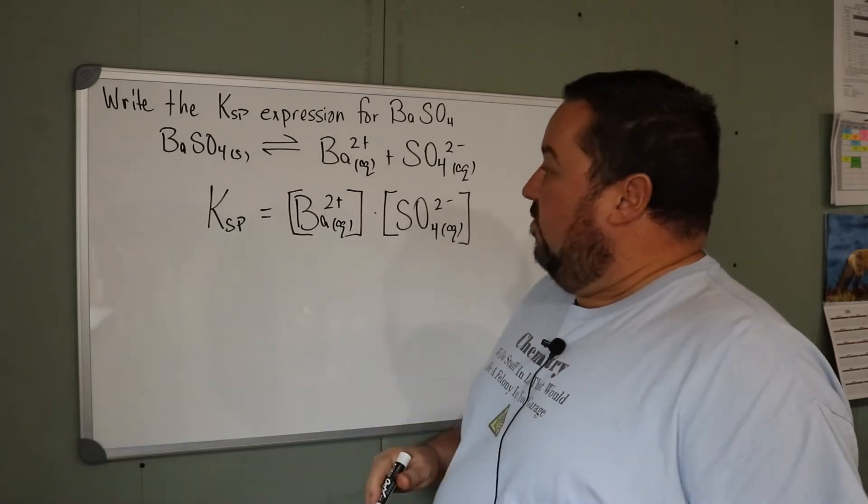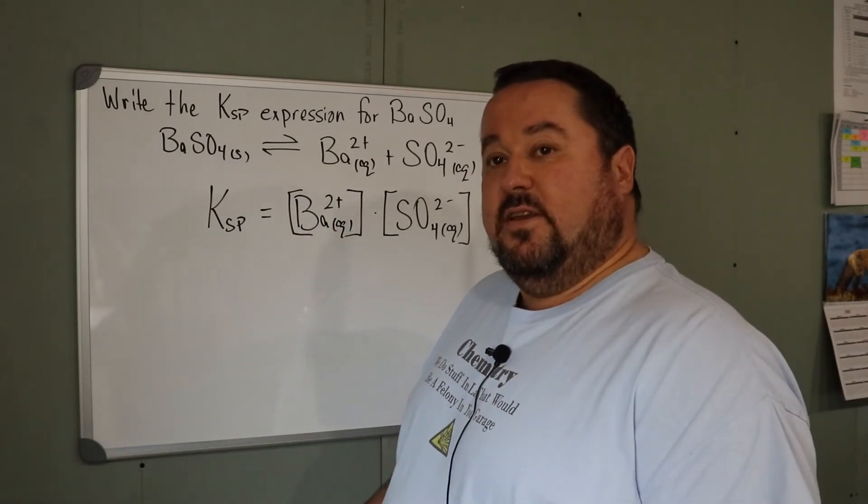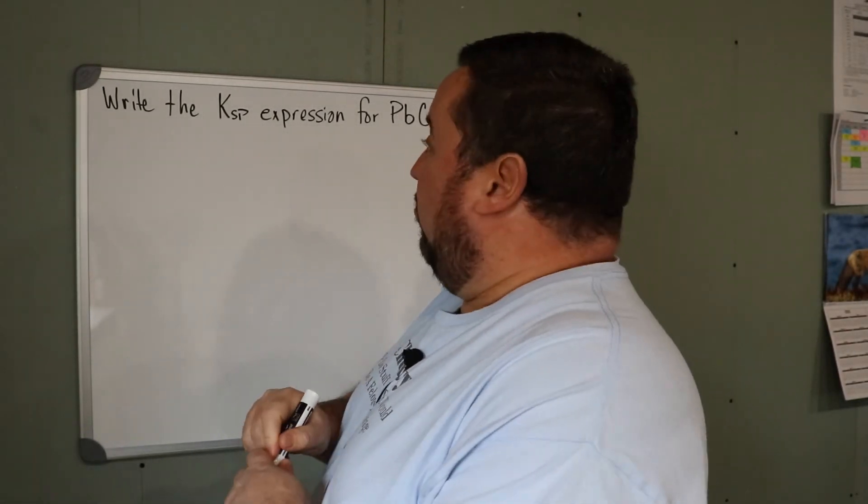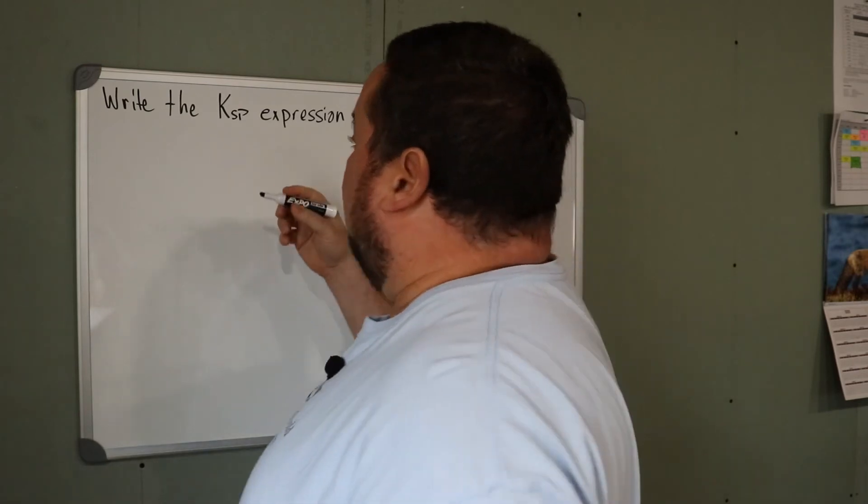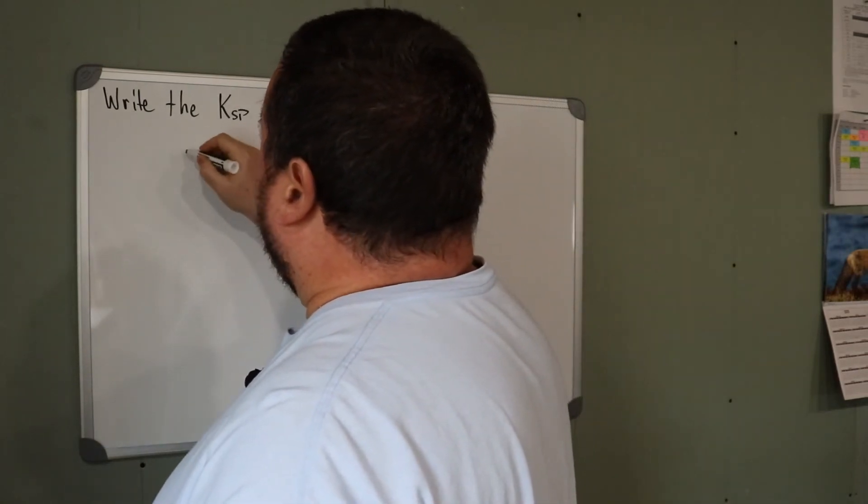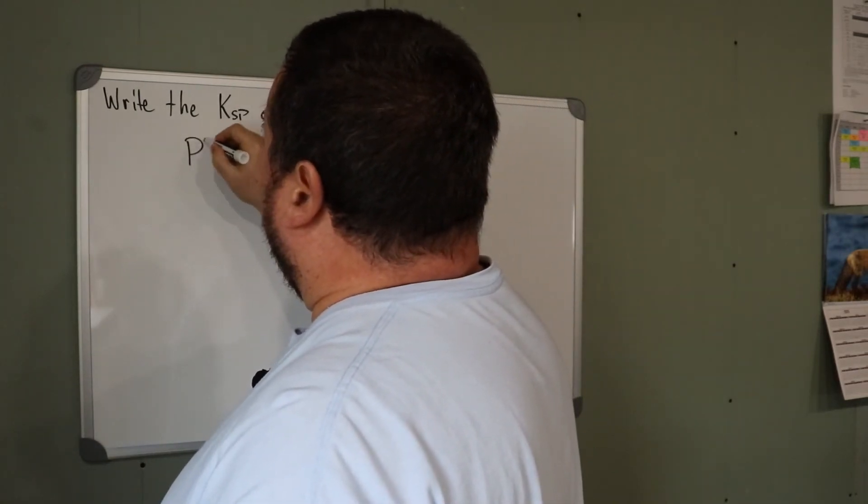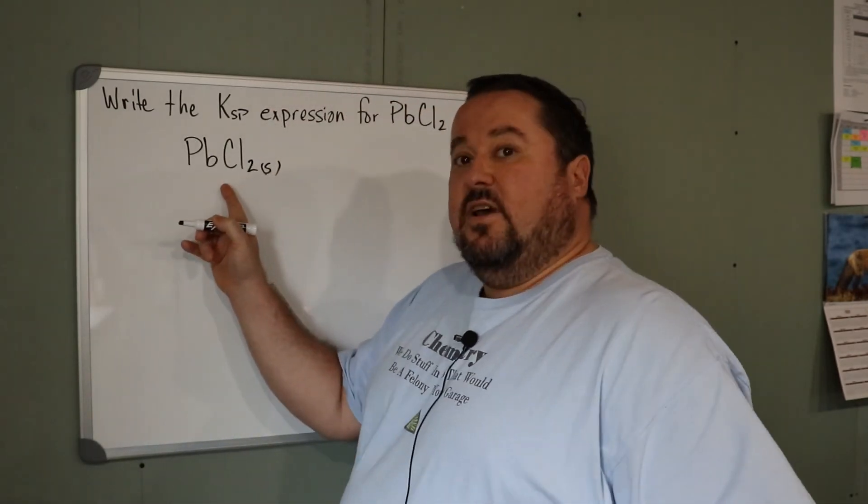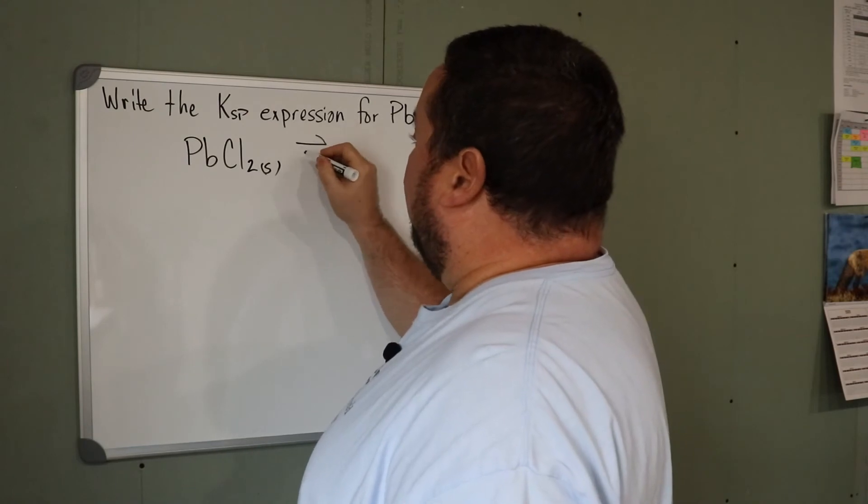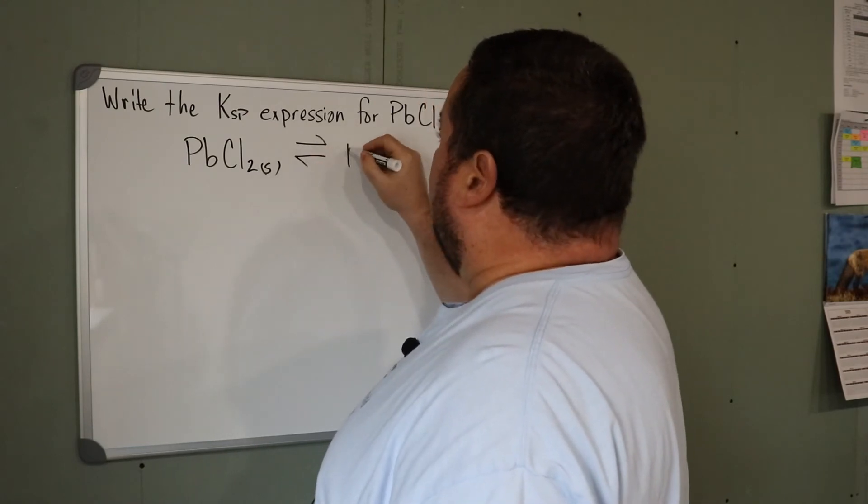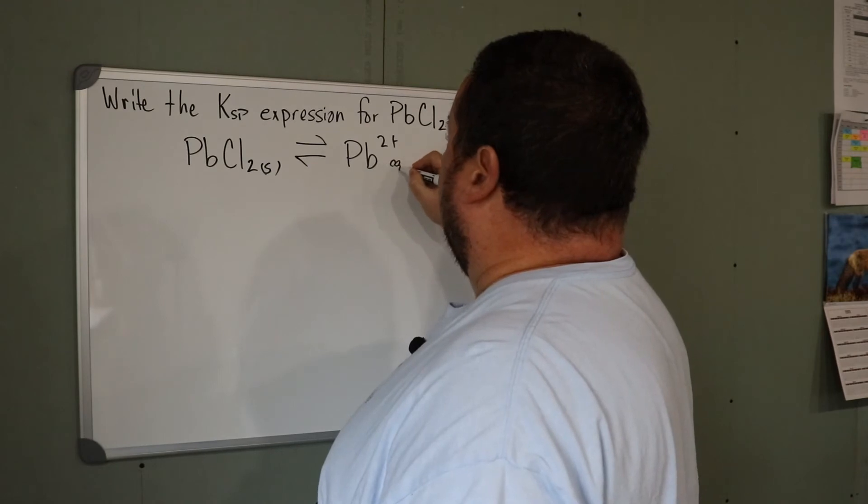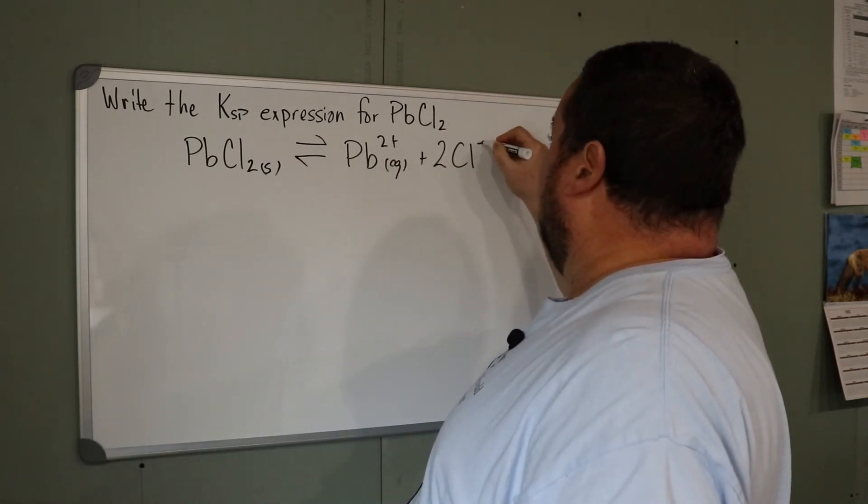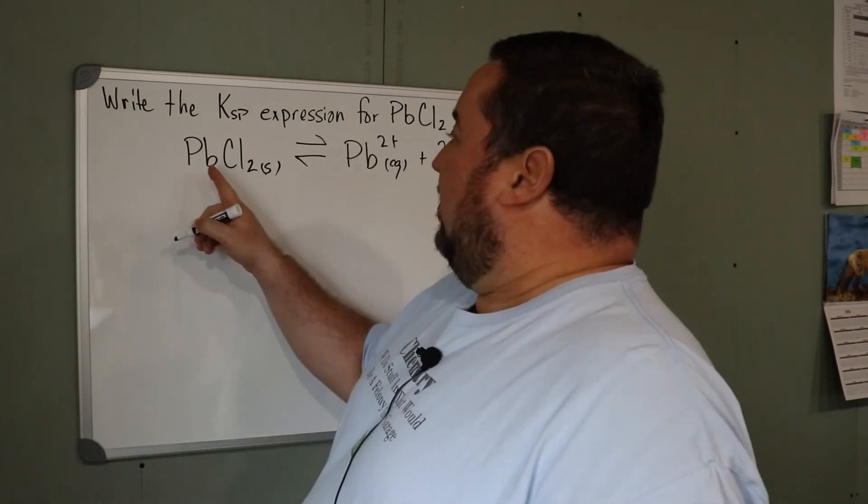The solubility product for lead(II) chloride - again, we need the dissolving equation for lead(II) chloride. PbCl2 solid is in equilibrium with its ions: Pb2+ aqueous and 2 Cl- aqueous. When lead(II) chloride dissolves, it gives us a lead 2+ ion and 2 chloride 1- ions.